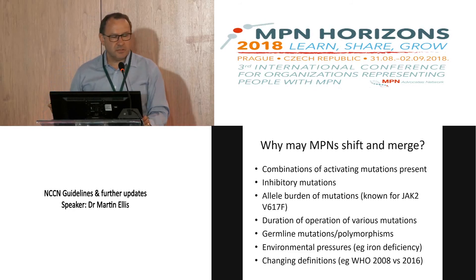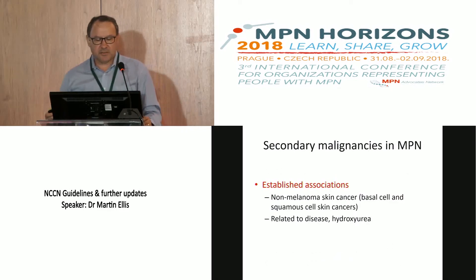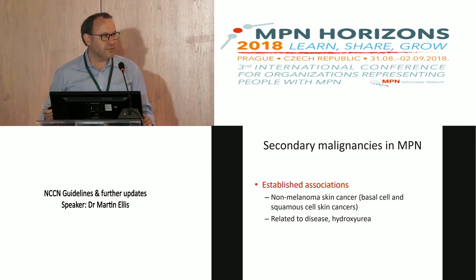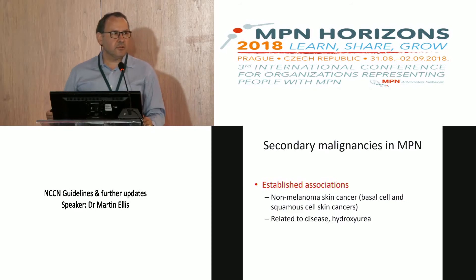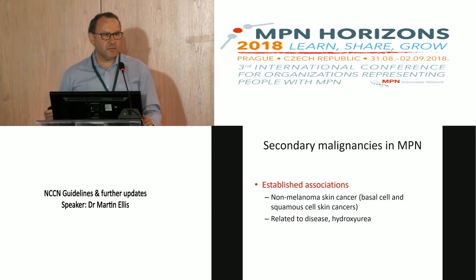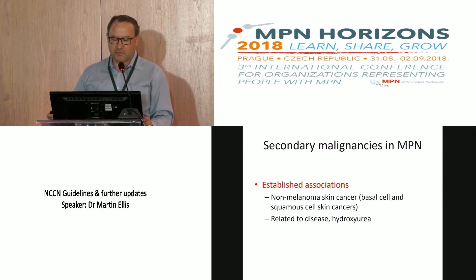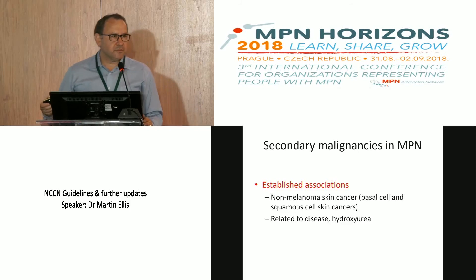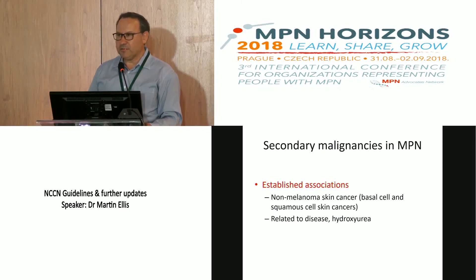Briefly looking at secondary malignancies: there are established associations between MPNs and secondary malignancies, particularly non-melanoma skin cancers — basal cell carcinoma and squamous cell carcinoma. These are locally invasive skin cancers needing treatment; squamous cell carcinoma can metastasize and cause death. We know there's an increased risk of developing these skin cancers in MPN patients, related to the disease and also statistically to the use of hydroxyurea. It's very important to counsel patients early on, especially when starting hydroxyurea, about the need for routine dermatological follow-up and to report early any skin abnormalities.